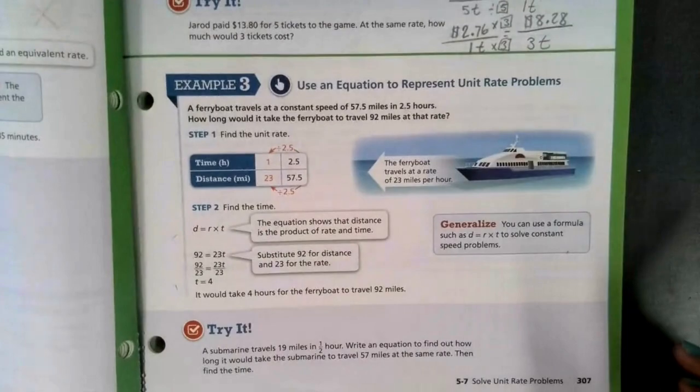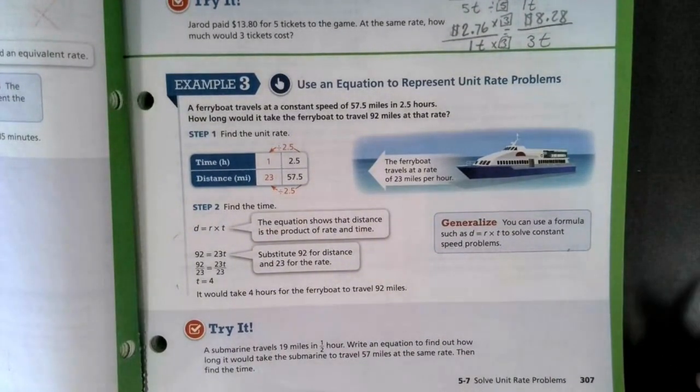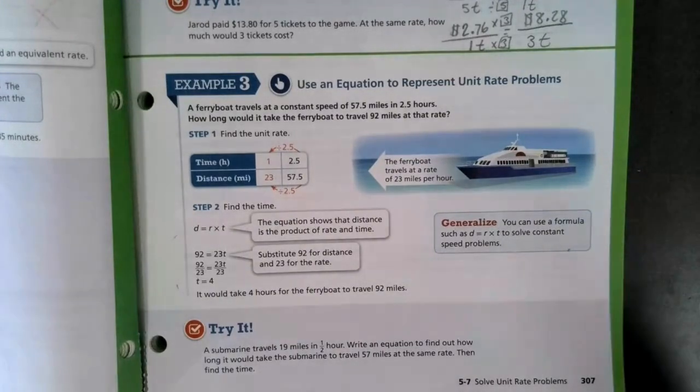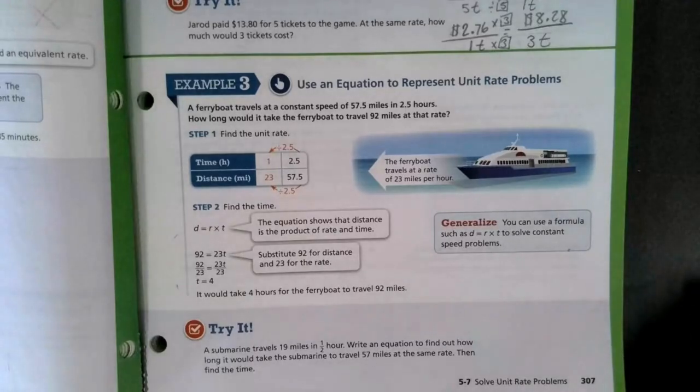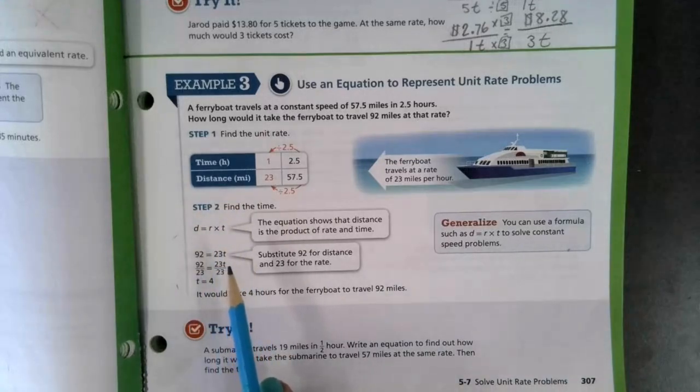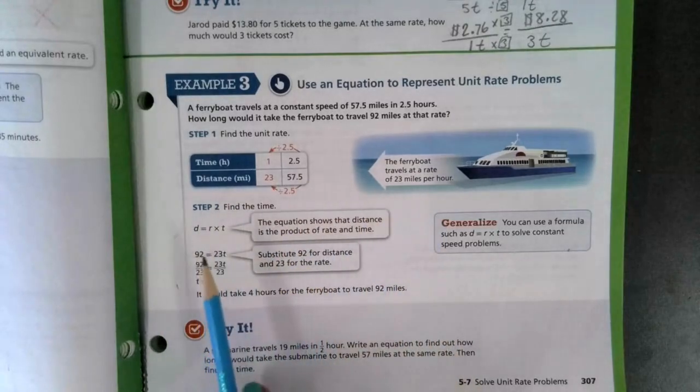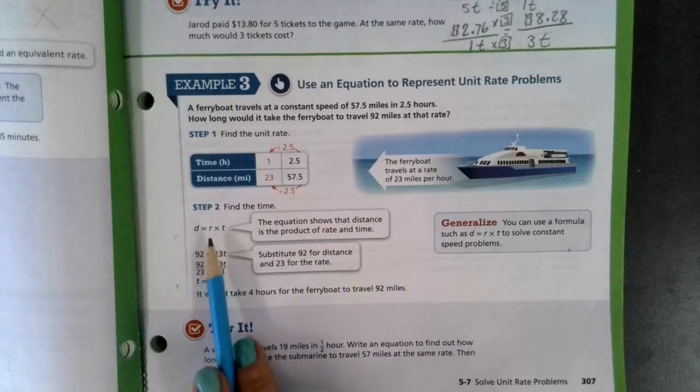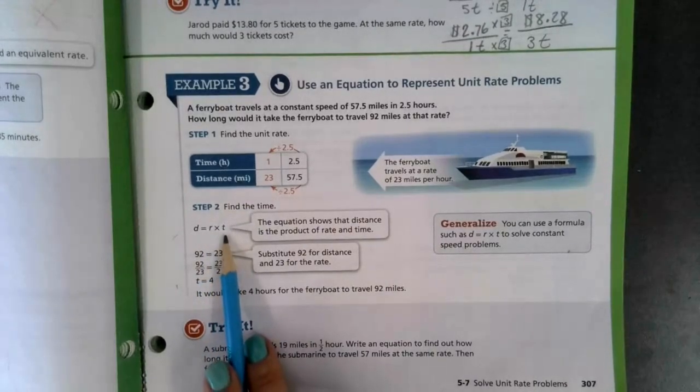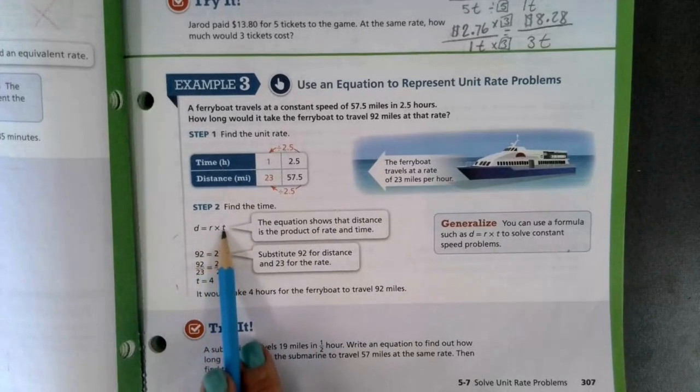Example three. Here we have using equations to represent our unit rate problems. A ferry boat travels at a constant speed of 57 and a half miles in two and a half hours. How long would it take the ferry boat to travel 92 miles at this same rate? All right. So when you are using distance and time, figuring out a constant speed, you can use this formula, distance equals rate times time. So if we do that, we're going to set up our equation, distance equals rate times time.